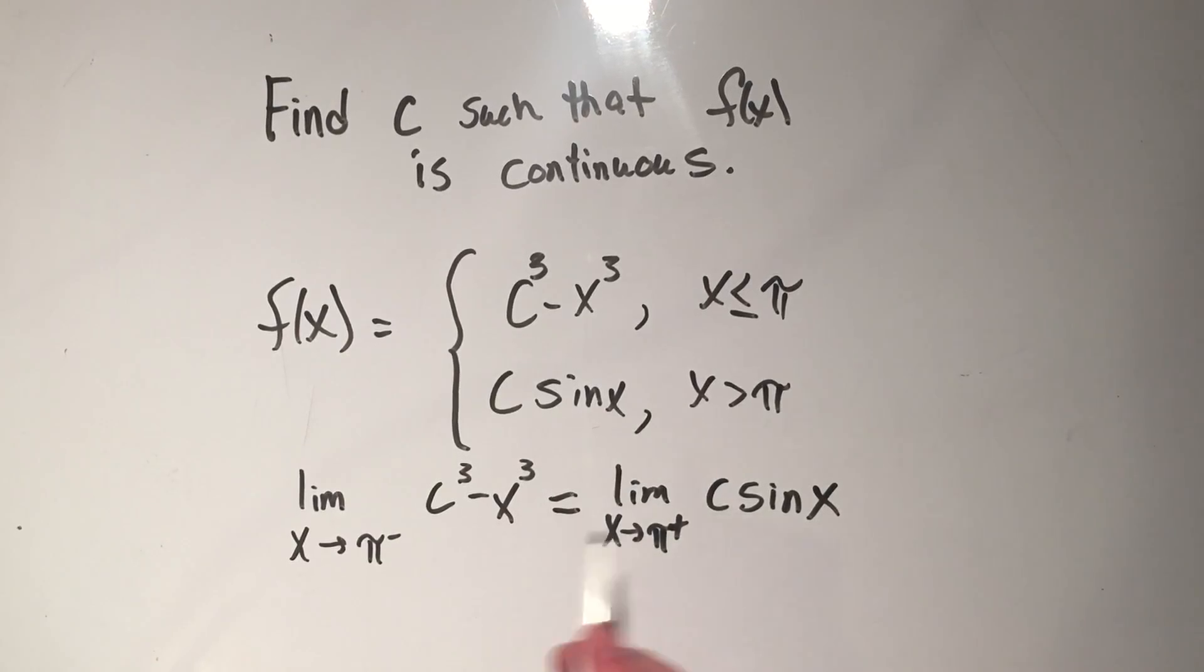Now I have to solve these two limits. And luckily, this is a case where I can just plug in the value. So if I just plug in pi for x, I'll have c cubed minus pi cubed equals, well, if I plug in pi for x, what's sine of pi? Sine of pi is zero. Last time I checked, I hope that didn't change. That's a joke. Okay, now I can just solve for c.